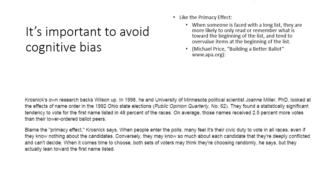One of the last things to mention is the importance of avoiding cognitive bias when putting together a survey or a ballot. The primacy effect is that when somebody is faced with a long list of things, they're more likely to only read or remember what is toward the beginning of the list, and they tend to overvalue items at the beginning. This is a well-known, well-studied feature of human nature. If you're doing a survey that involves a list, you have to mix up the order and give lots of different randomized versions of that list. Otherwise you'll get bias in favor of things earlier on the list.